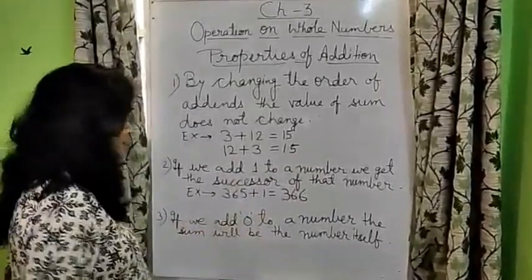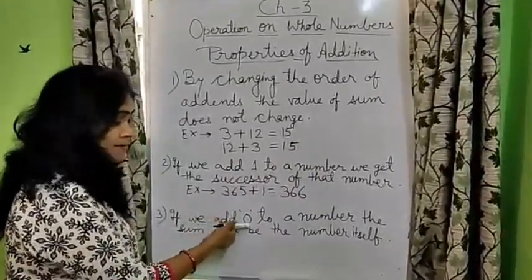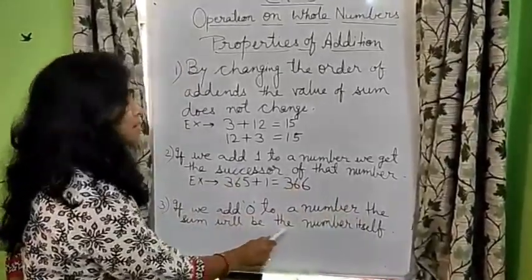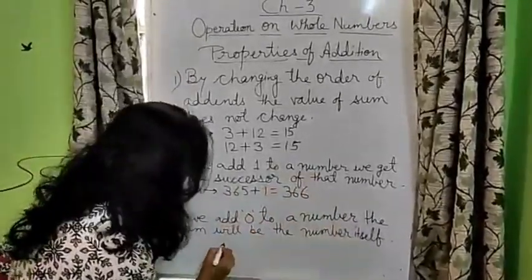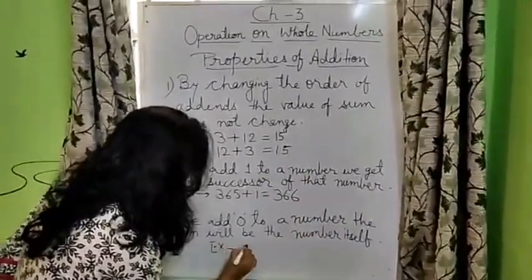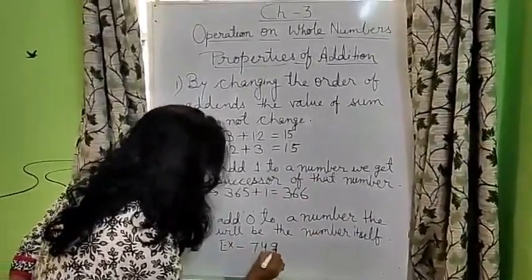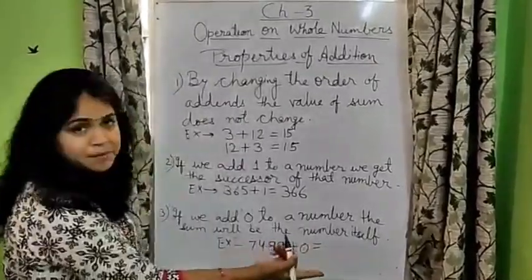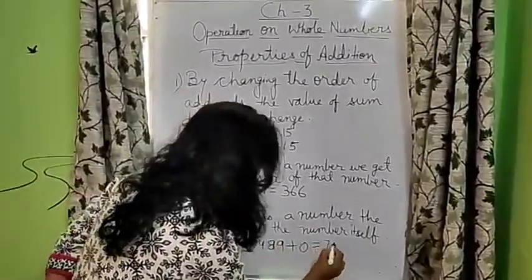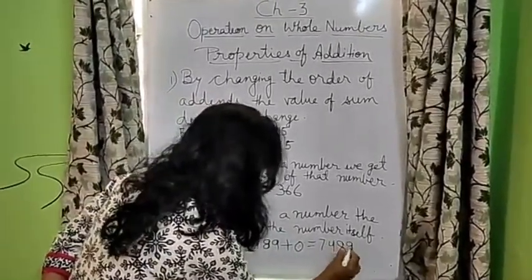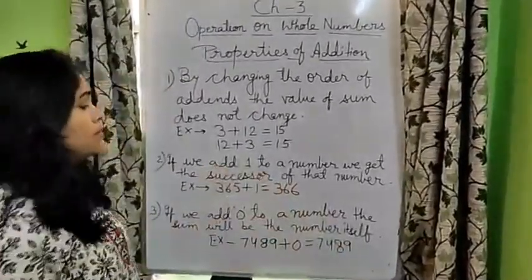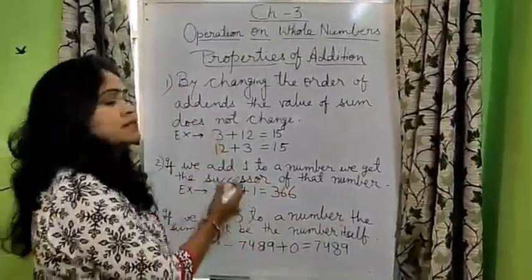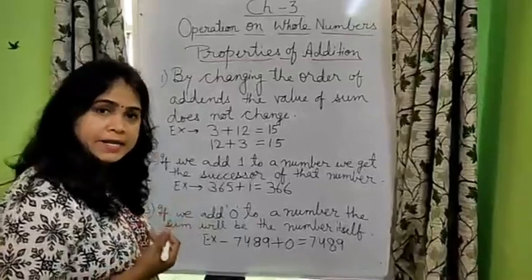Similarly, we can use the same concept for any number. Next point is, if we add 0 to a number, any number, the sum will be the number itself. For example, I am giving you 7489. If we add 0 to this, what is the result? Number itself. So this way, we learn the properties and we try to use it in future when we will do the addition.